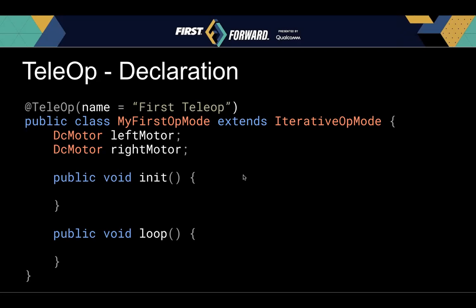A follow-up question: convince me in a sentence or two that Java and Android Studio is better than block programming. Block programming does work fine if you're not trying to do anything advanced. The advantage of Java is you have a lot more control over your program and you can do a lot of things in Java that you can't do in blocks — especially things like parallel tasks, doing things at the same time, or if you want to track versions of your code and collaborate with people. It's a lot easier to do that with Java than with blocks.